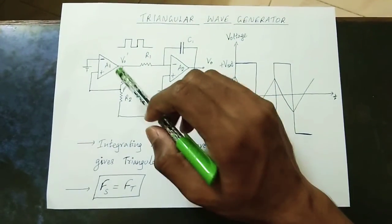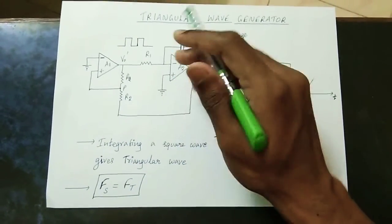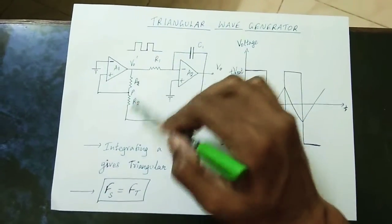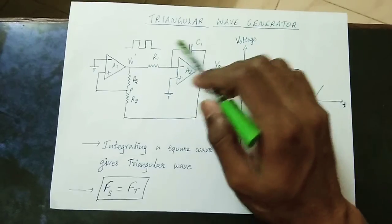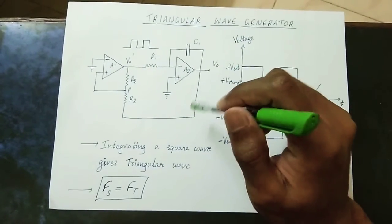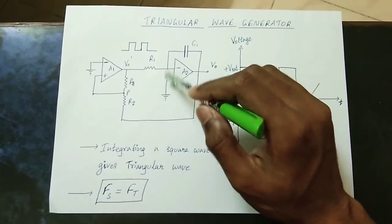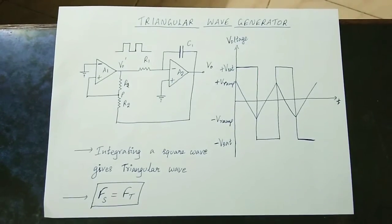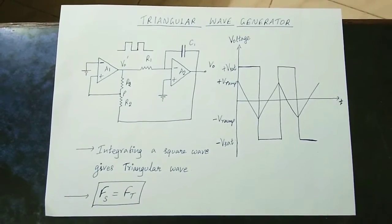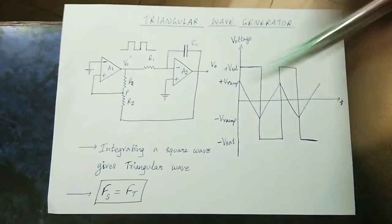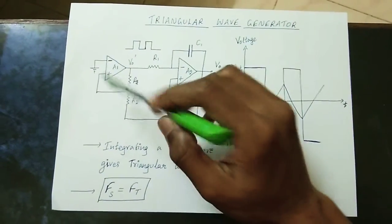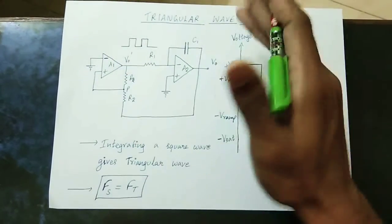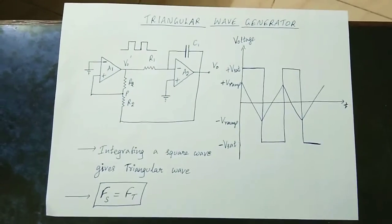There are two op-amps: one resistor and op-amp A2. The feedback uses a capacitor — the input is a resistor and the capacitor is automatically an integrator. So the astable multivibrator is the modified circuit that generates a square wave, and the square wave input to the integrator gives the triangular wave output.